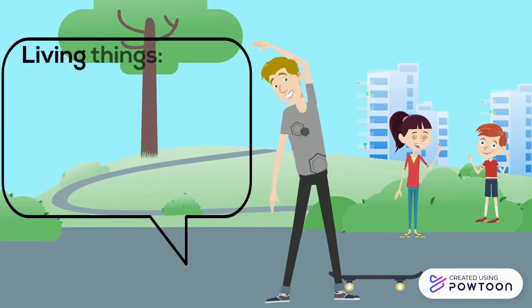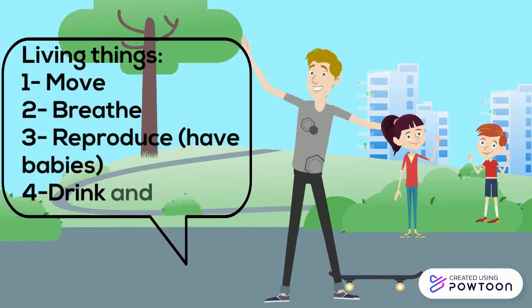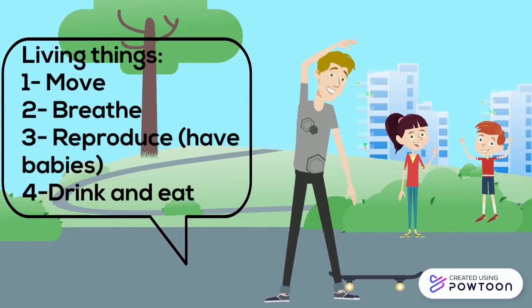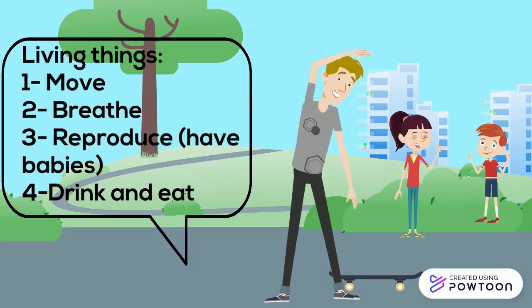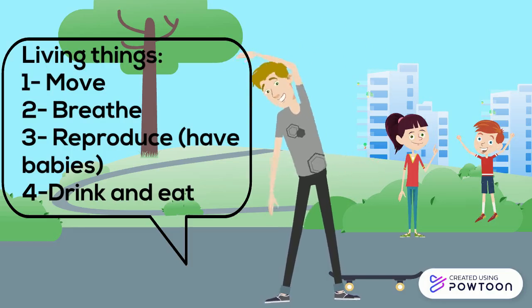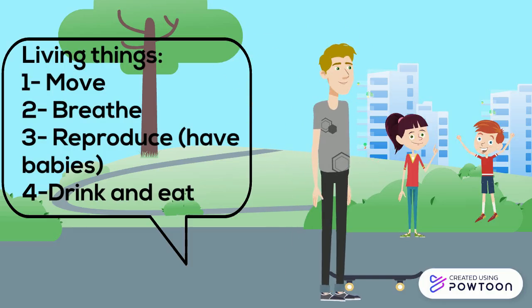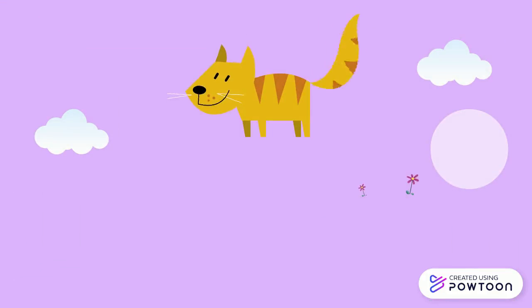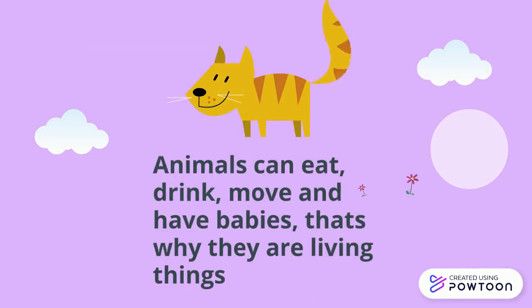So why are humans and animals living things? Because they can move, walk, exercise, breathe, take a breath, reproduce or have babies, drink and eat. Animals also can eat, drink, move and have babies and reproduce. That's why they are living things — they can breathe as well.